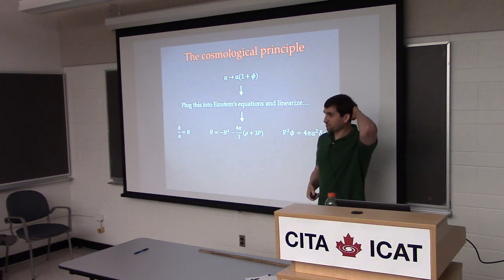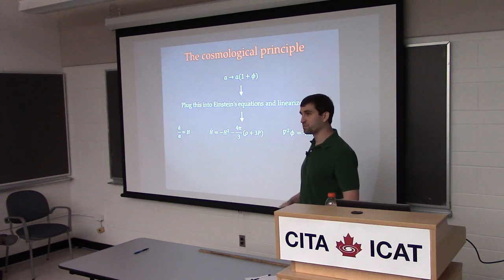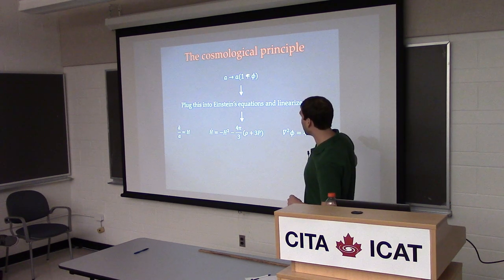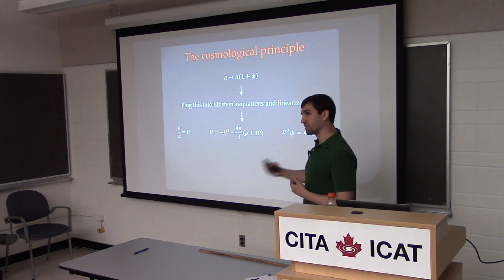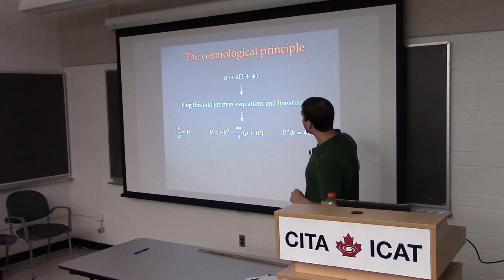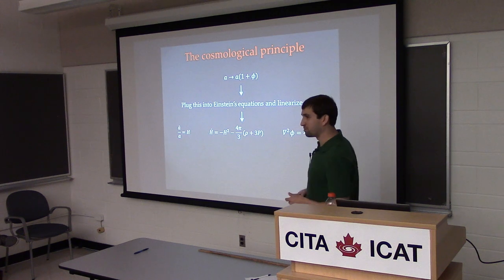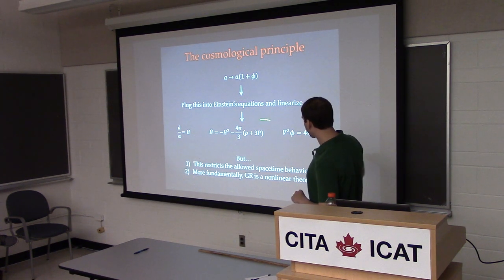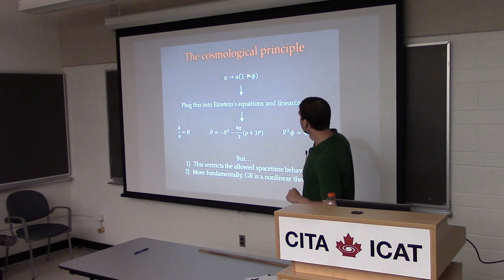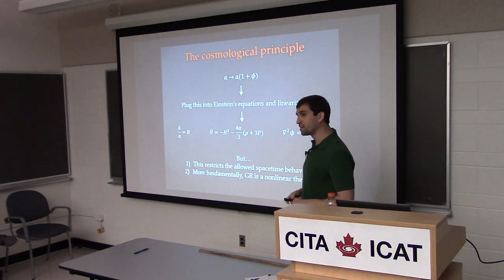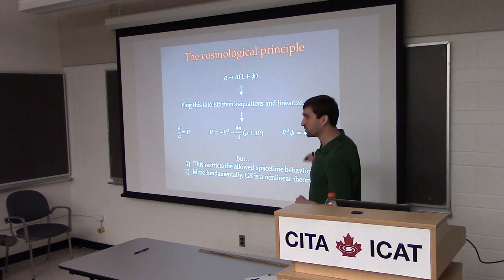Of course, we know the universe isn't perfectly homogeneous and isotropic. The simplest thing to do is say, what happens if we have perturbations around the scale factor? Here I'm allowing perturbations around a homogeneous and isotropic background. I can plug this into Einstein's equations and linearize — at zeroth order the Friedmann equations pop out, and at first order we end up with something that looks like Newtonian gravity. But these equations have restricted the form of the metric; we've also linearized the theory, but fundamentally GR is a nonlinear theory.